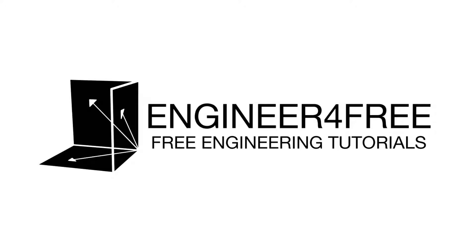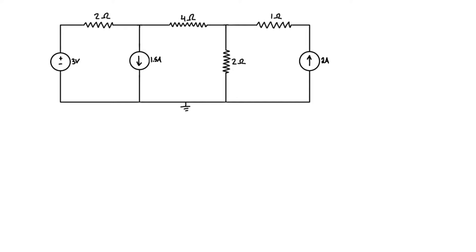Hey, welcome back. I've got another example here on using super mesh analysis to find all of the branch currents in this circuit. We've got three power sources and three different loops, but the important thing here is we have a current source in between two loops. When you see this and are asked to use mesh analysis, this immediately means you have to use super mesh.